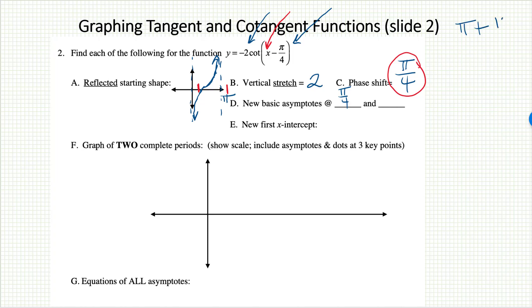And the asymptote that used to be at pi, I'm going to have to add pi over 4 to that to figure out where it is now. I'll get a common denominator. I'll have 4 pi over 4 plus 1 pi over 4. Looks like 5 pi over 4. So at least for that first cycle, that's where my asymptotes will be.